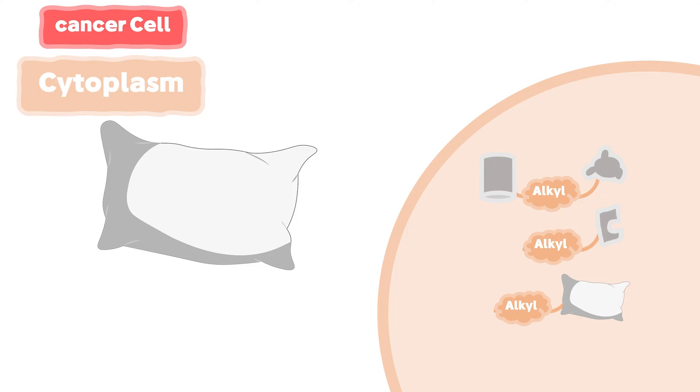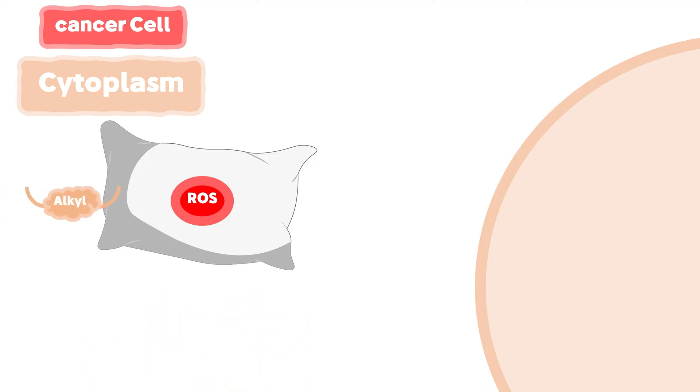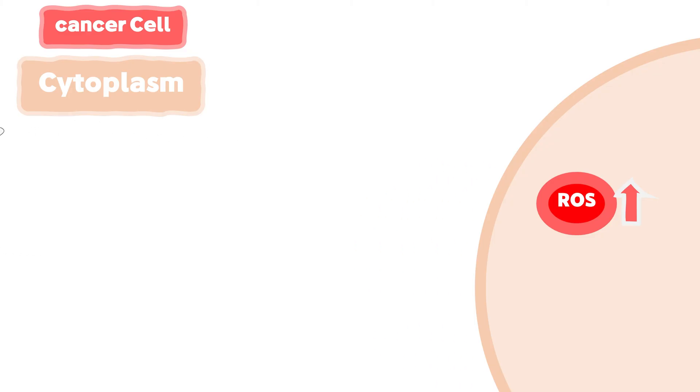Moreover, they bind with an essential type of proteins that function as a buffer for reactive oxygen species. The alkyl groups consume these protective proteins, leading to an increased free reactive oxygen species. The high level of ROS will lead to the cell death by apoptosis.